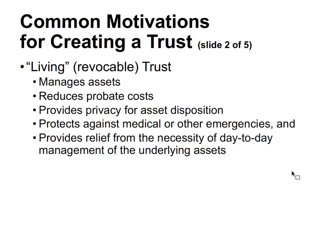Another common trust is the living revocable trust, which exists during the life of the grantor. Revocable means that the grantor or whatever designated party has the ability to revoke the trust at any point. It's a way to manage assets and it reduces probate costs upon death, since the probate process can be time-consuming and expensive.